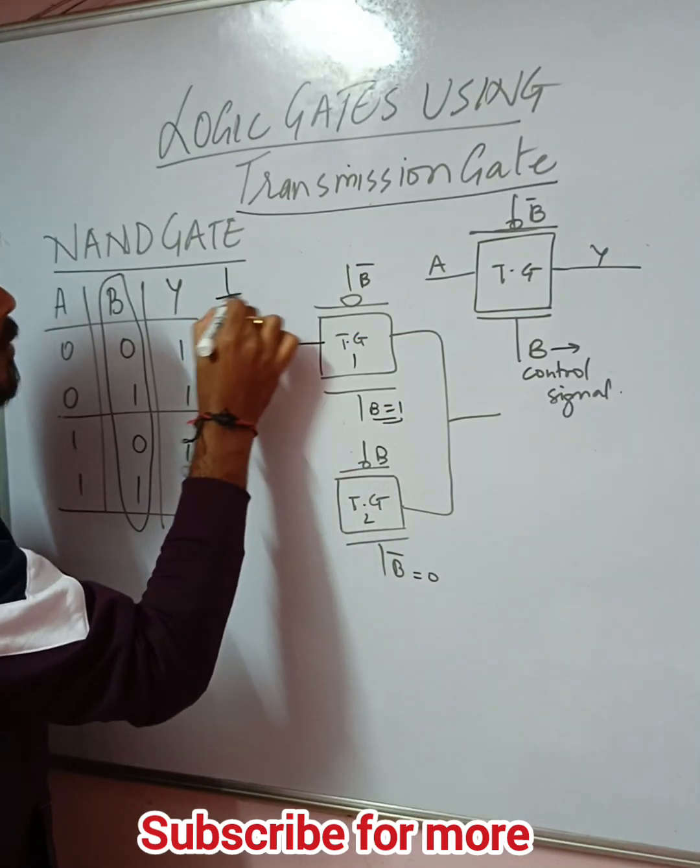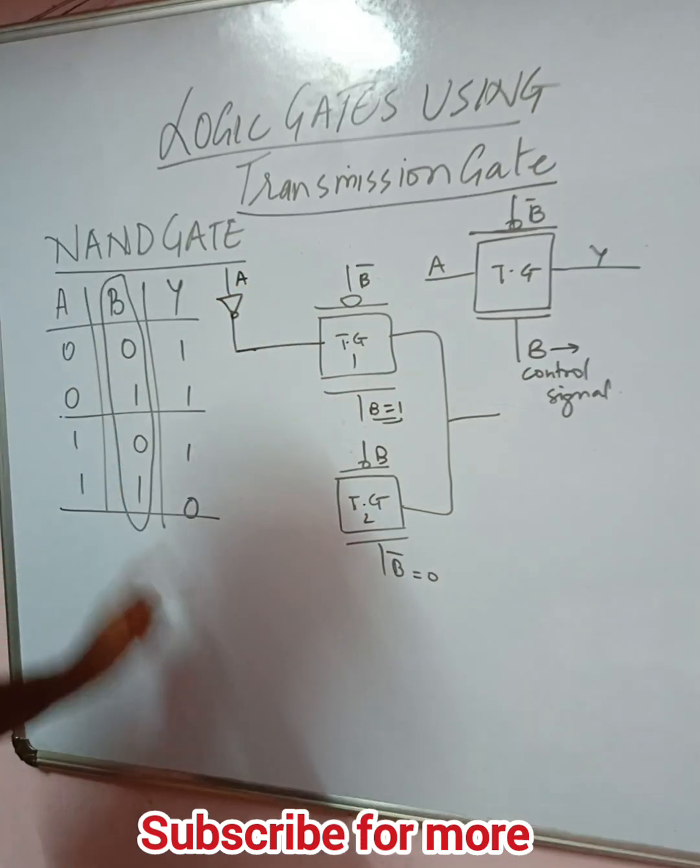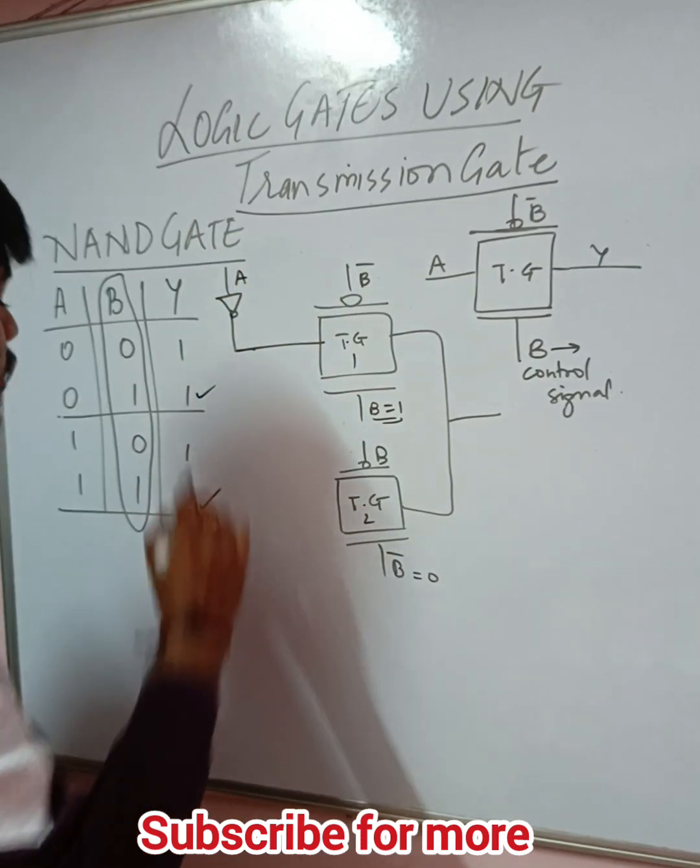So here you have to connect A with a 0. That's it. This satisfies the first two conditions, when B equals 1.